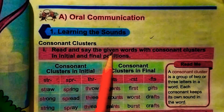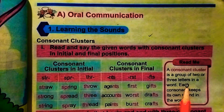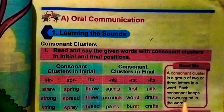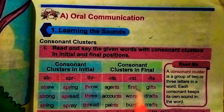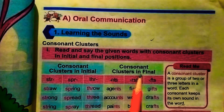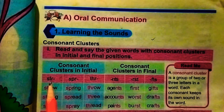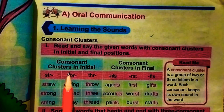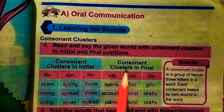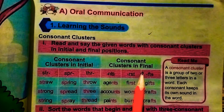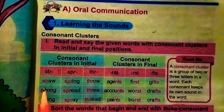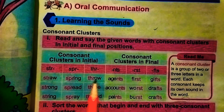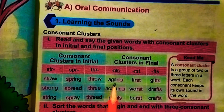We have to learn consonant clusters. Consonant clusters are two or more consonant sounds within a single word, where each consonant retains its own sound. They can be initial — appearing at the start of a word — or final, appearing at the end. In the initial position we have: straw, strong, string, spring, spread, spray, throw, three, thread.